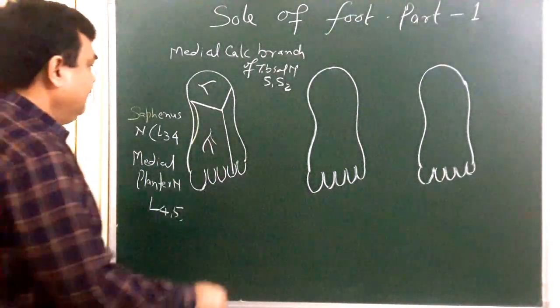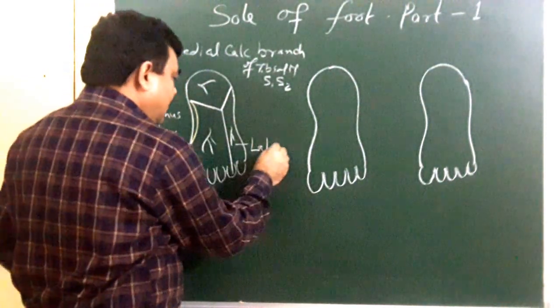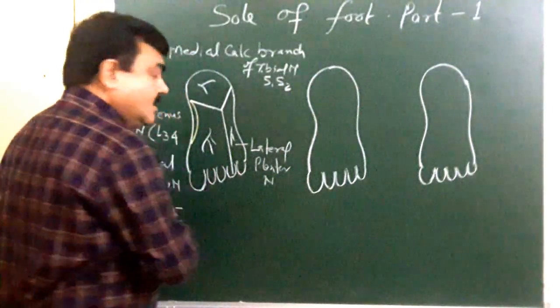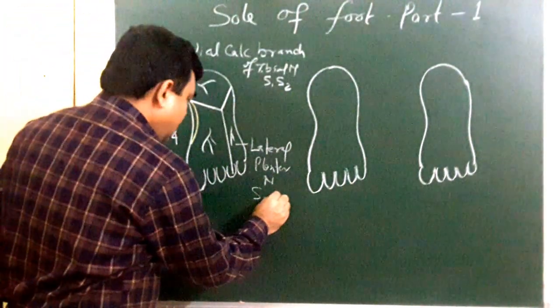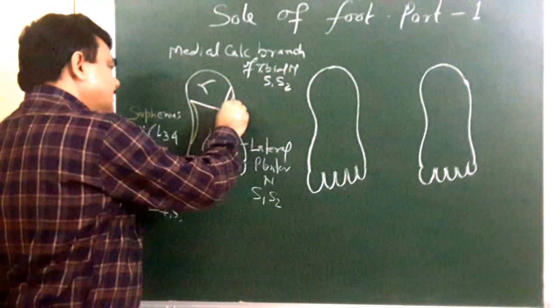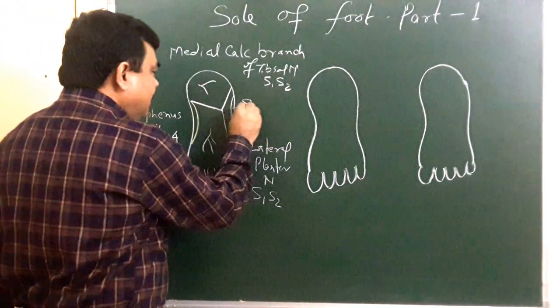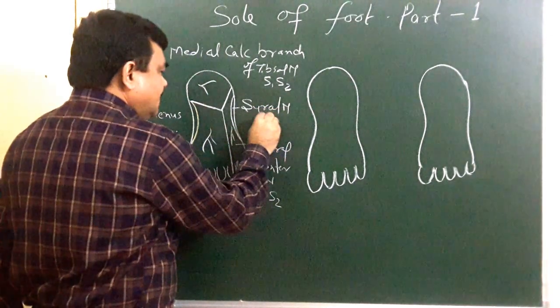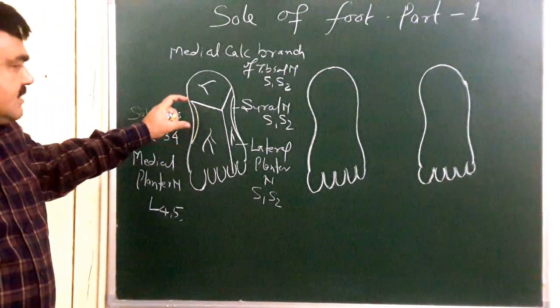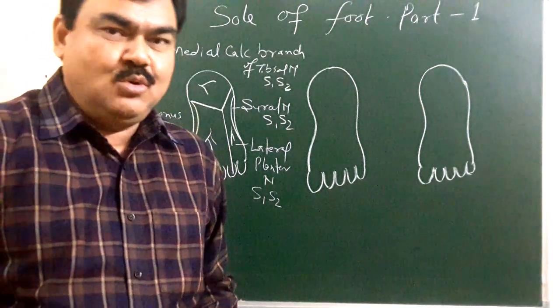And this lateral part here, this part contains lateral plantar nerve root value S1 S2. And margin of lateral side some part here sural nerve is present. This root value of the sural nerve is S1 S2. So these are several nerves which give cutaneous supply to sole skin of the sole.